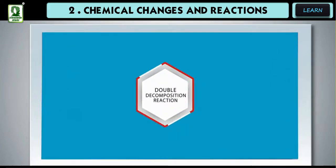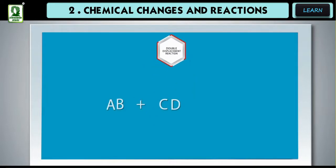The fourth type of chemical reaction is double decomposition or double displacement reaction. It is a reaction in which two compounds react to form two new compounds by the mutual exchange of radicals.